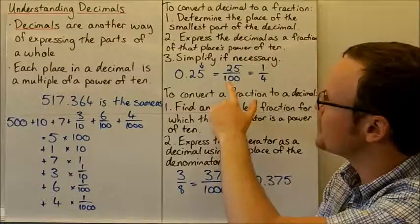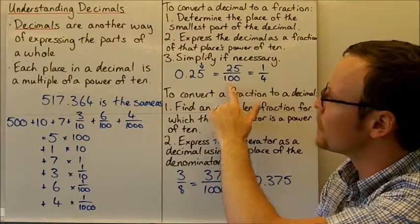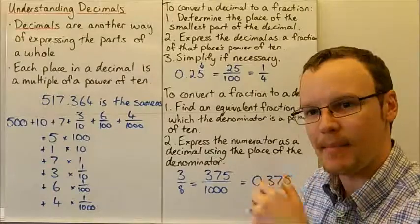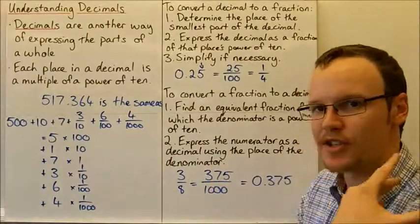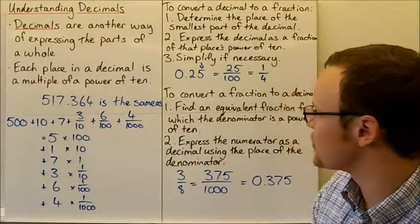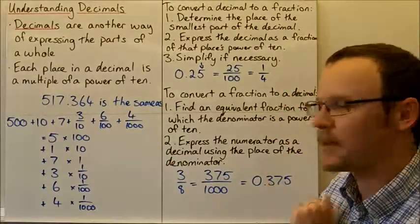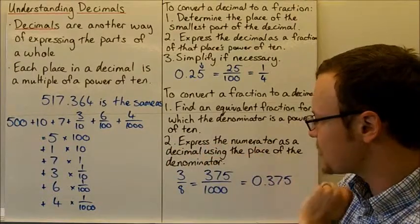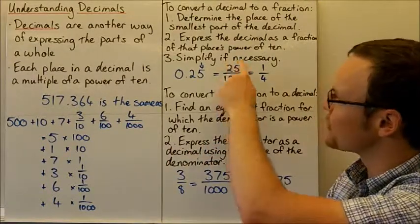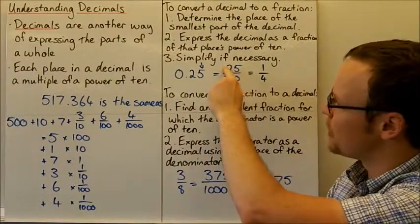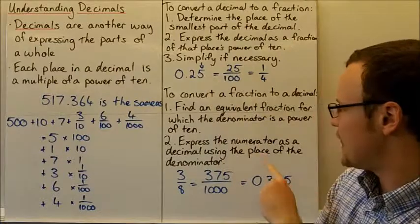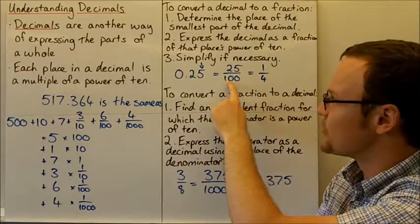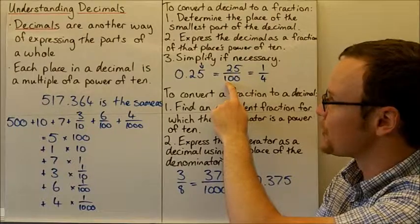A power of 10 is going to be 10, 100, 1,000, a million — it's just 1 with a number of zeros after it. Then we express the numerator as a decimal using the place of the denominator. So if the denominator says hundredths, we place the numerator in the hundredths column.